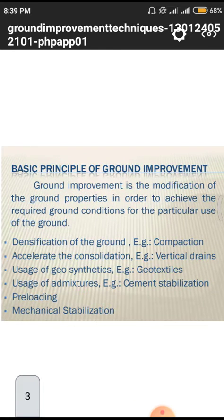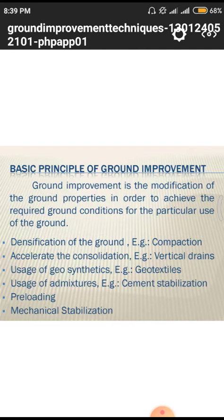The basic principle of ground improvement involves different methods. One is densification of the ground — simply decreasing the void content and water content by compaction using heavy weighted equipment like rollers.